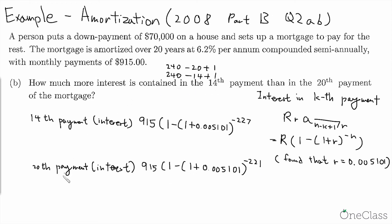Here we can begin subtracting one another to find out how much more interest there is in the 14th one than the 20th one. And we do that by factoring out 915 so it will be easier to find out. So it will become 915[(1 - 1.005101^-227) - (1 - 1.005101^-221)]. And this in the end will give us $8.94, and this is the answer we're looking for.